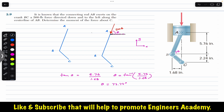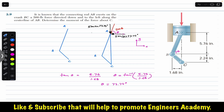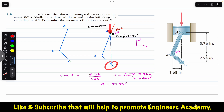The force has one component in the horizontal direction (negative x) and one component in the downward direction (negative y). The component with which the angle is made is always the cosine component, so the horizontal component is 500 cos(73.74°). The vertical component is the sine component: 500 sin(73.74°). If we join points A and C, we can see that the vertical component passes through point C, so its moment arm from C is zero — it produces no moment about C. Only the horizontal component produces a moment about C.